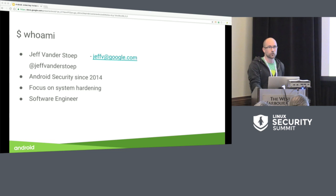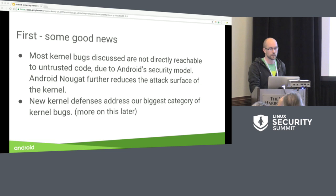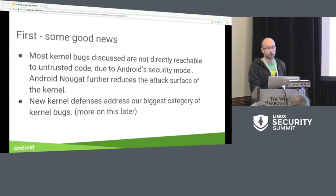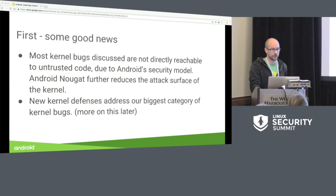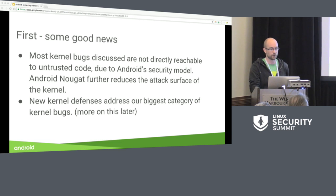We're going to be discussing mostly kernel bugs that we've been seeing over the last couple years. Before we get too much into kernel bugs, we have some good news. The first is that most of the kernel bugs we're going to be discussing today were not directly reachable by untrusted code due to Android's security model. We've substantially cut down on that attack surface in Android Nougat. The other piece of really good news, tied into work from the kernel self-defense project, is that some of the new defenses being added address our biggest category of kernel bugs.